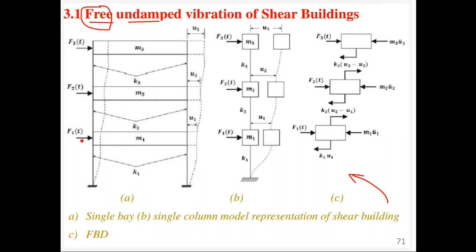This is a three-story building — I consider just a single bay for simplicity, though we can have multiple bays. We can have a single column representation by having an effective combined stiffness. The masses are concentrated at floor levels — floors one, two, three. With no damping shown, the stiffness is given as K1, K2, K3 for the first, second, and third floors respectively. Externally applied lateral forces F1 up to F3 are also shown.